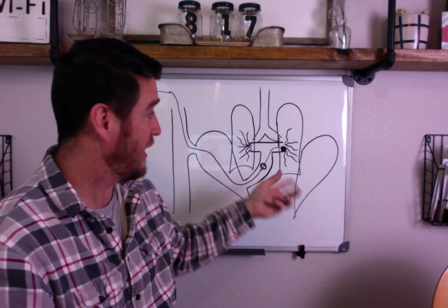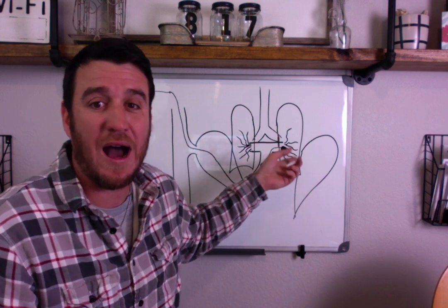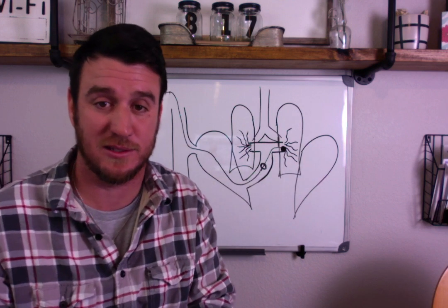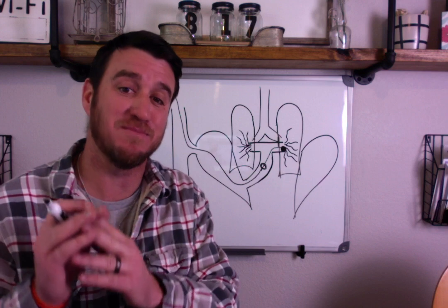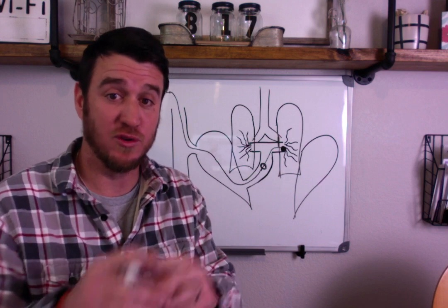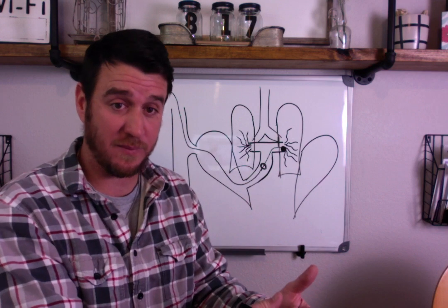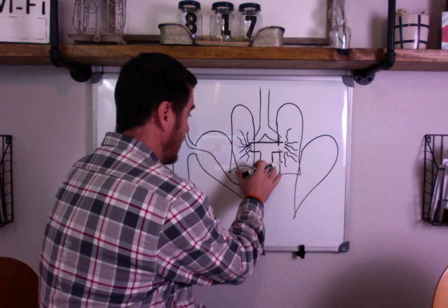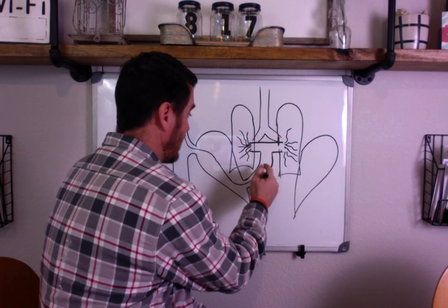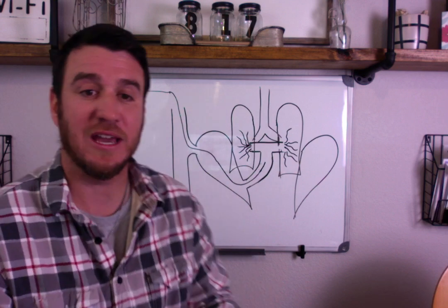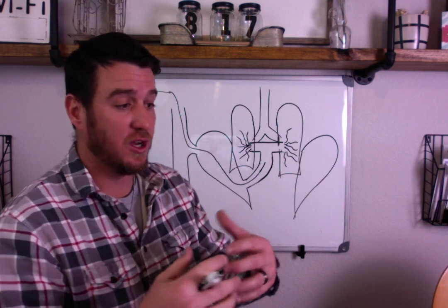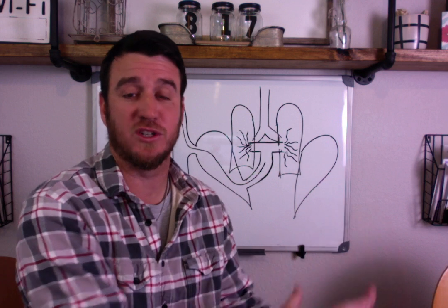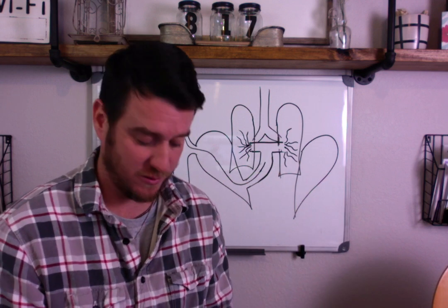You basically created a pulmonary embolism, which is why you do not keep that balloon inflated more than 20 seconds — 10 to 20 seconds max. You get your measurement, you deflate the balloon, and you withdraw the catheter back to the pulmonary artery with the balloon down. It stays there until you wish to monitor pulmonary capillary wedge pressure again.